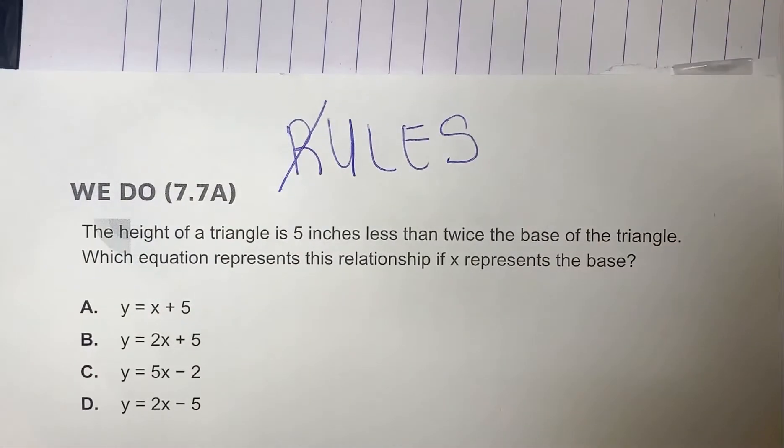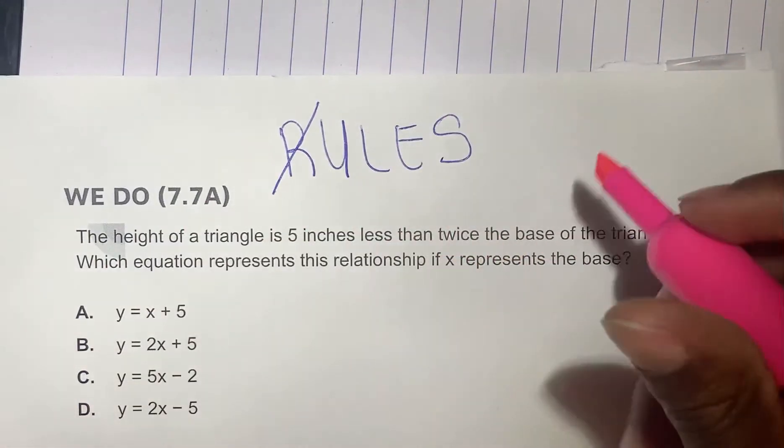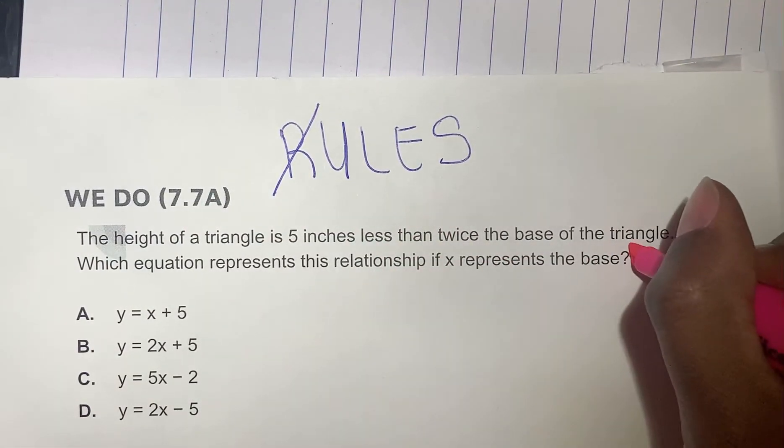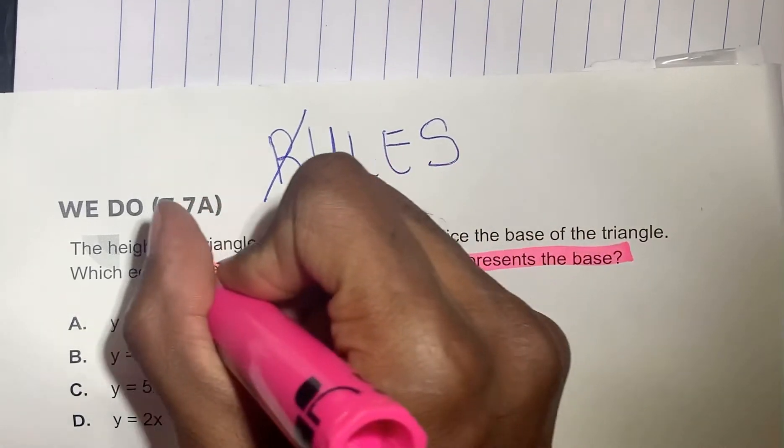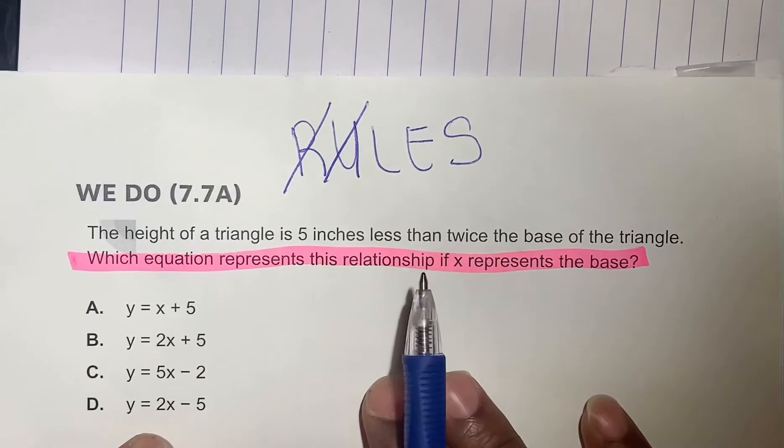We read the word problem. Now we're going to underline the specific question. Which equation best represents this relationship if x represents the base? The height of a triangle is five inches less than twice the base of the triangle. Now we've underlined the specific question.